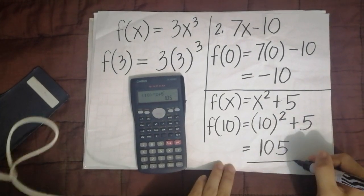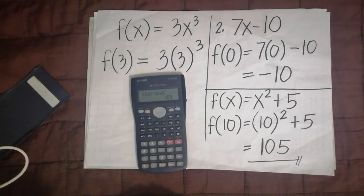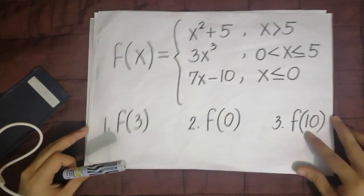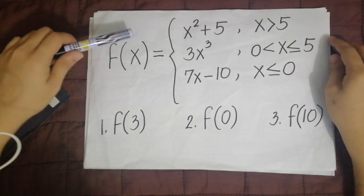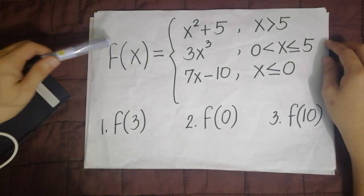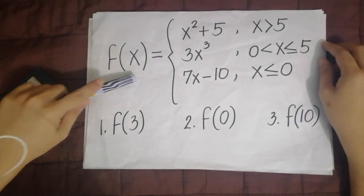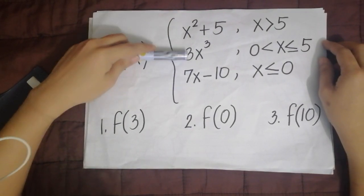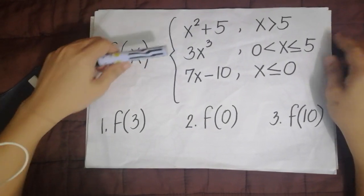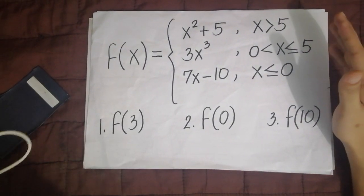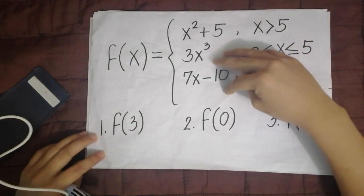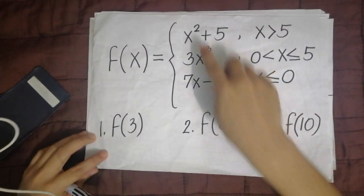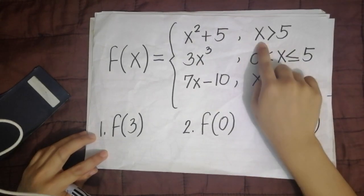So that is the answer — 105. That's it for our class. This is the piecewise function. It looks like this: one function f of x, but it has multiple expressions — it can have two, three, or four, depending on the given. And every expression has a restriction.